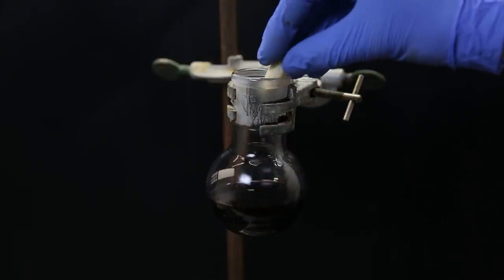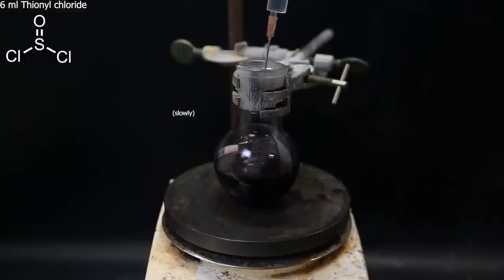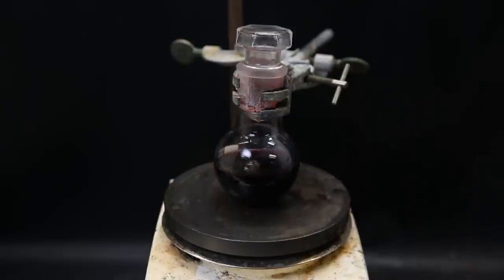I then add a stir bar, and move the flask to a stir plate. Now I add 6 ml of thionyl chloride, and stopper the flask lightly, to allow any gases to escape. I then leave it to stir for an hour.